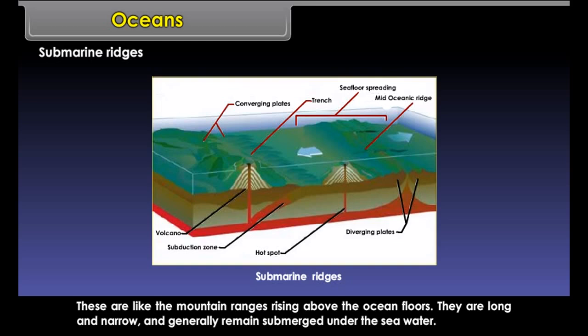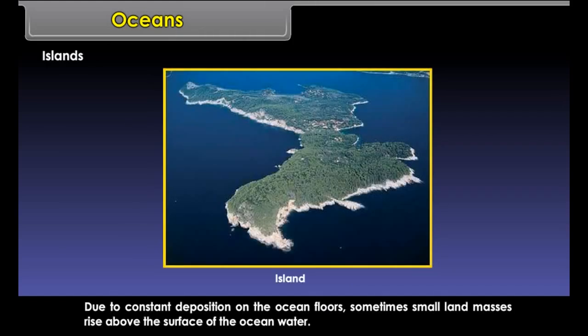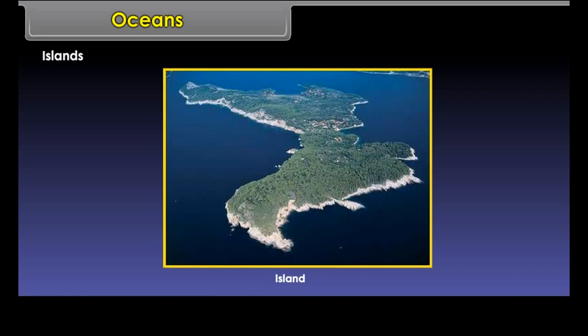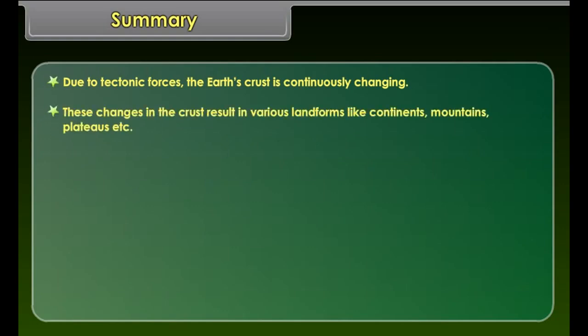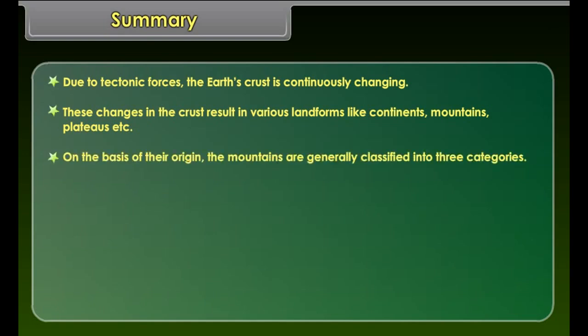Submarine ridges are like mountain ranges rising above the ocean floors. They are long and narrow and generally remain submerged under sea water. Due to constant deposition on the ocean floors, sometimes small land masses rise above the surface of the ocean water; they are called islands, formed due to coral or volcanic deposition.